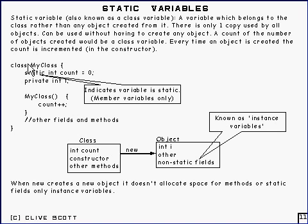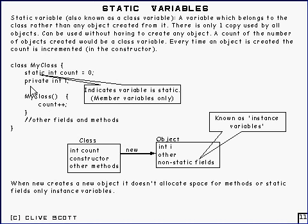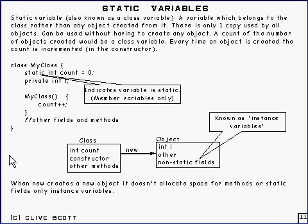Here's an example of something called myClass, which has a static variable — an integer set to zero initially — and another private variable. Here's the constructor. The constructor, by the way, doesn't return anything at all; it has nothing on the right, and its name has to be the same as the name of the class, so you know it's a constructor. What it does is increment the count, and then there are other fields.